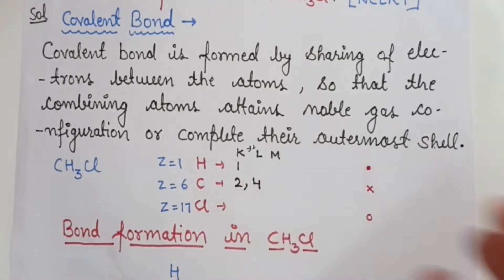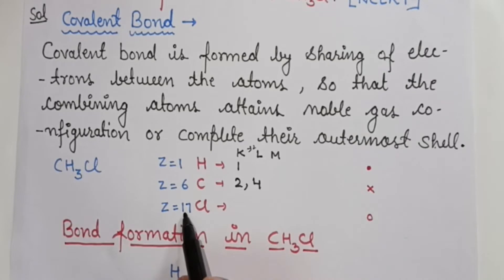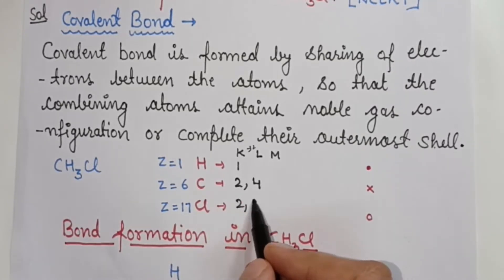Now L-shell, M-shell, and N-shell. Chlorine has 17 electrons. The distribution in the shells is 2, 8, 7. So you will have total 17.